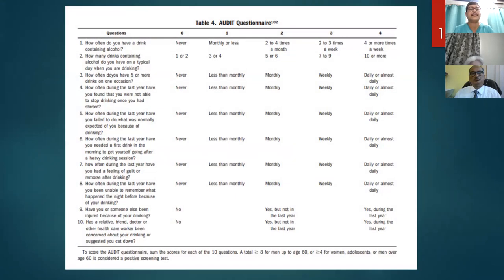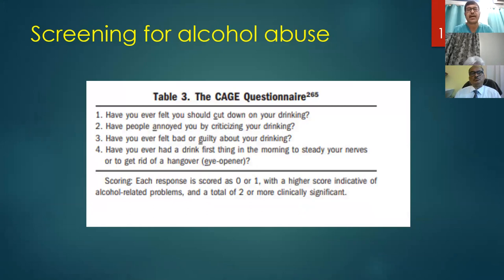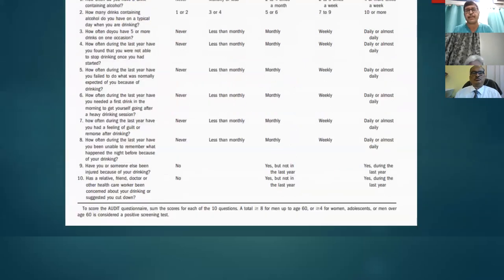A more detailed elaboration is the AUDIT — Alcohol Use Disorder Identification Test — a composite of 10 points, but mostly difficult to apply. We are quite conversant with the CAGE questionnaire, and for every postgraduate student dealing with an alcoholic patient in examination, CAGE questionnaire should be asked because it is very easy and goes along with history-taking. Two or more positive responses is significant for alcohol abuse.